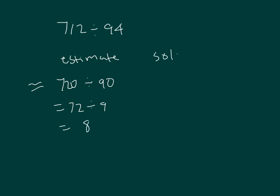So let's use that for our solution. 712 divided by 94. 8 times 4 is 32, regroup of 3. 8 times 9 is 72, plus 3 is 75. So that's actually too much. So I'm going to rewind. Instead of 8, we will put a 7 in there.